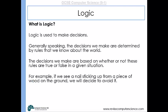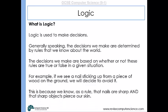So if you think about it, if you saw a nail sticking up from a piece of wood you would decide to avoid it. Why would you decide to avoid it? Because you know that as a rule, nails are sharp and sharp objects pierce our skin. So in other words it would hurt us, it would cut us, so we avoid it. These two facts, because they're both true, mean that the result would almost certainly cause us injury.